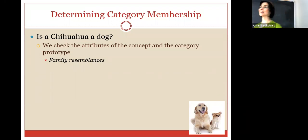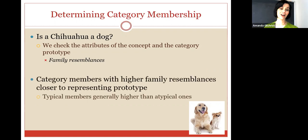And it's going to take us a little more time to think about if a chihuahua is a dog or not. So, category members that have higher family resemblances are closer to representing the prototype. So, when you said a lab is probably closest to the prototype, that is absolutely true. Typical members are generally going to be higher than atypical members. And yet, folks, I say all of this. And do you know what one of the number one dogs that people love in this country is? A pug.